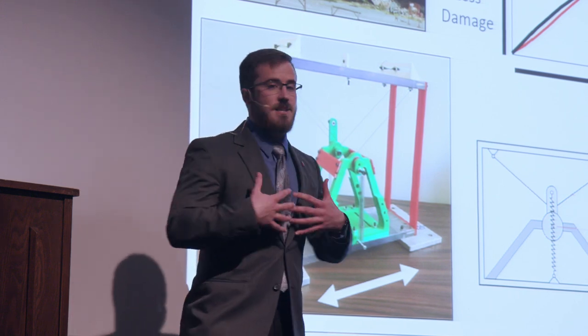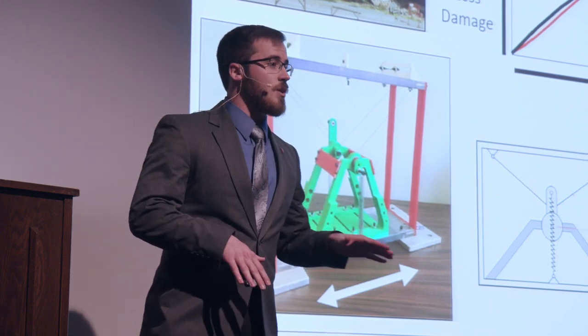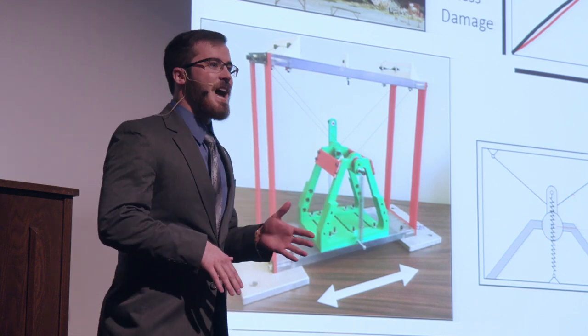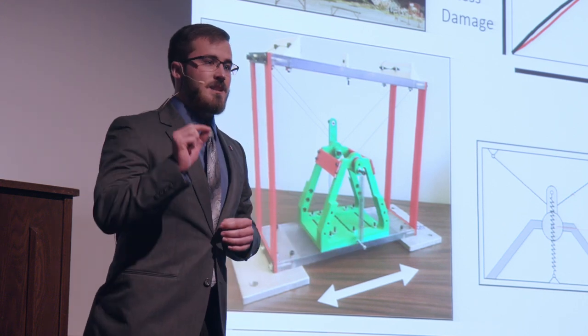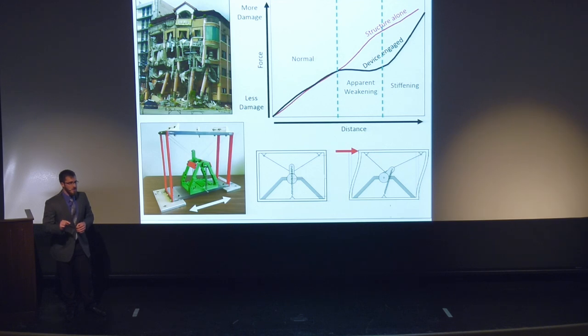My research seeks to mitigate the amount of damage caused by an earthquake by selectively causing the structure to behave as if it were weaker. We call this apparent weakening, and it's pictured by the graph on my slide.